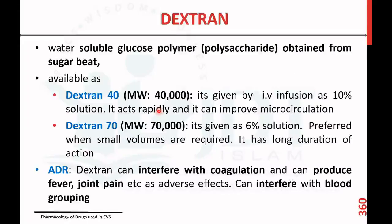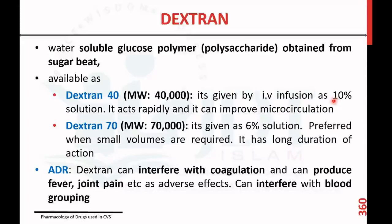The second type of plasma expander is dextran, which is a water-soluble glucose polymer obtained from sugar. There are two forms: dextran 40 and dextran 70. Dextran 40 is a water-soluble polymer with a molecular weight of 40,000 and is given by IV infusion as a 10% solution. It acts rapidly and can improve microcirculation.